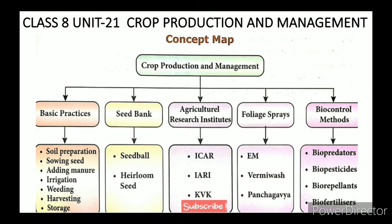In the lesson on crop production and management, you will see eight topics. The first topic is agricultural practices — the basic practices. These include climate and the Zayad crops. We classify the crops, and on the other hand, we see the utility of crops: food crops, fiber crops, ornamental crops, oil crops, and fodder crops.